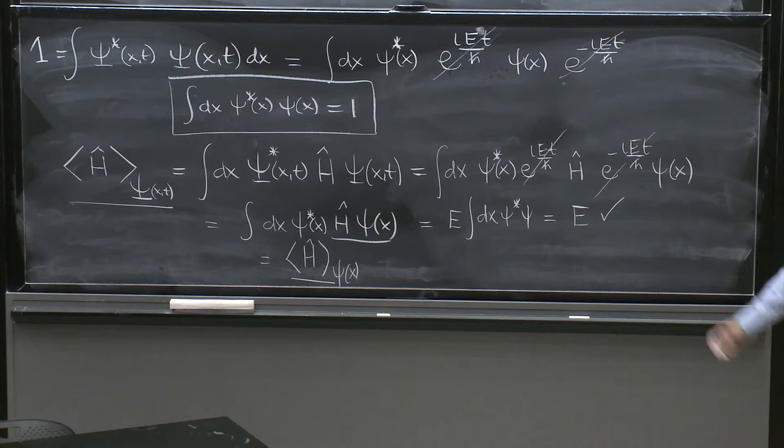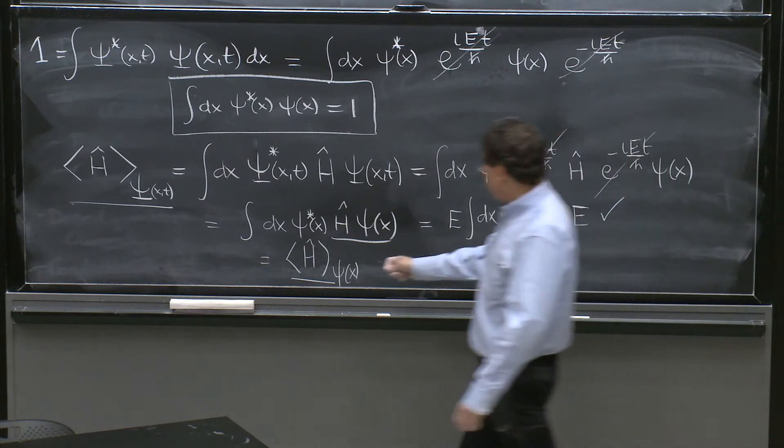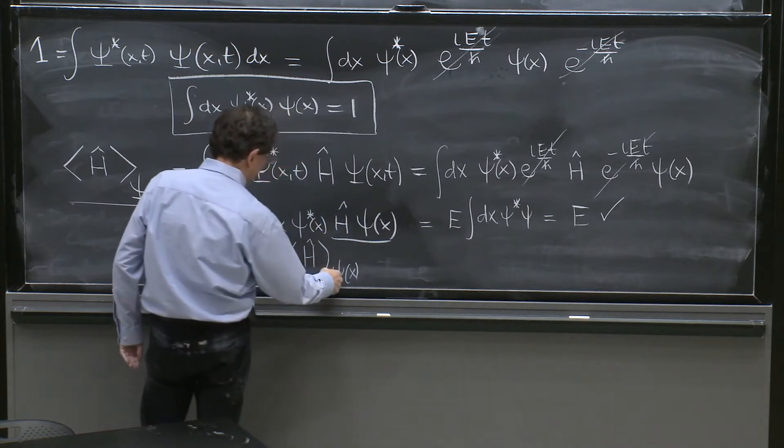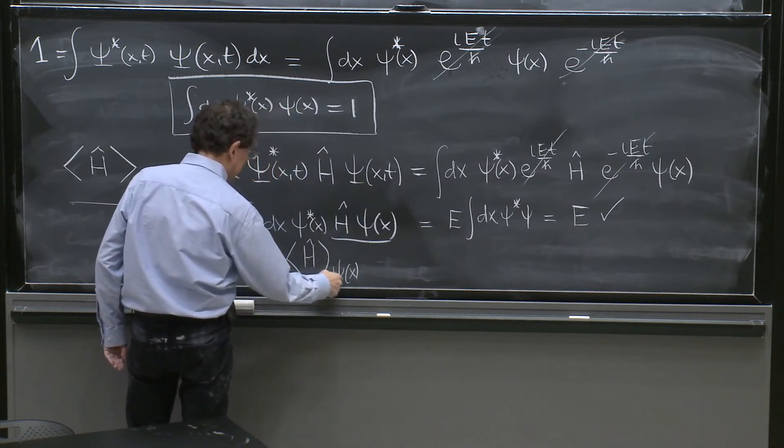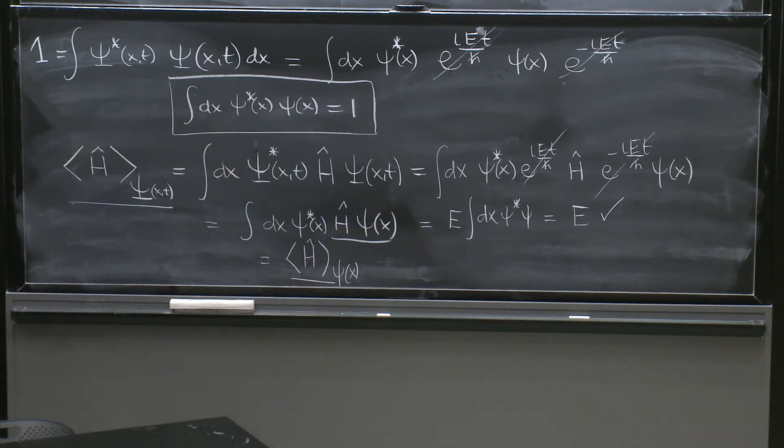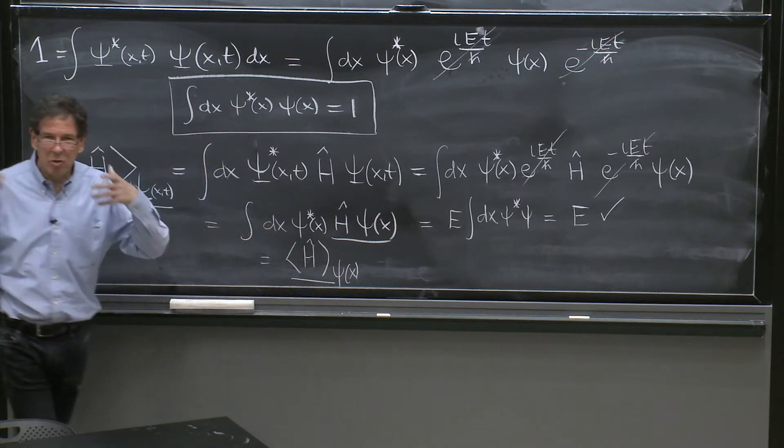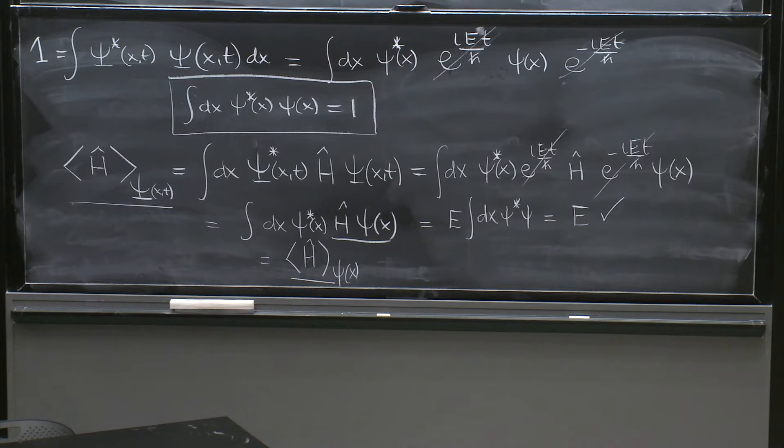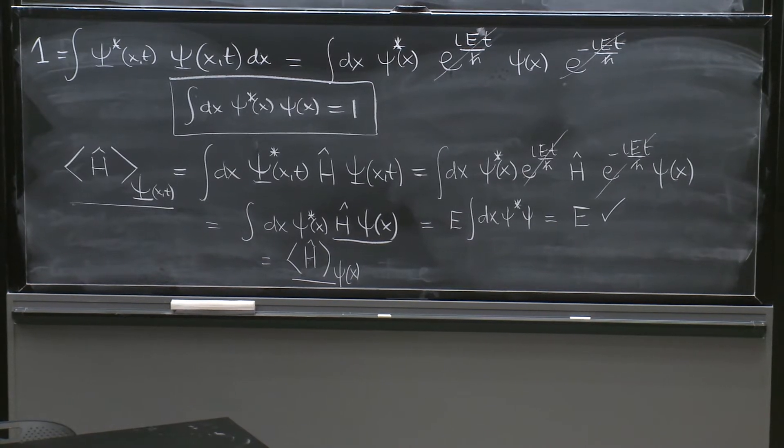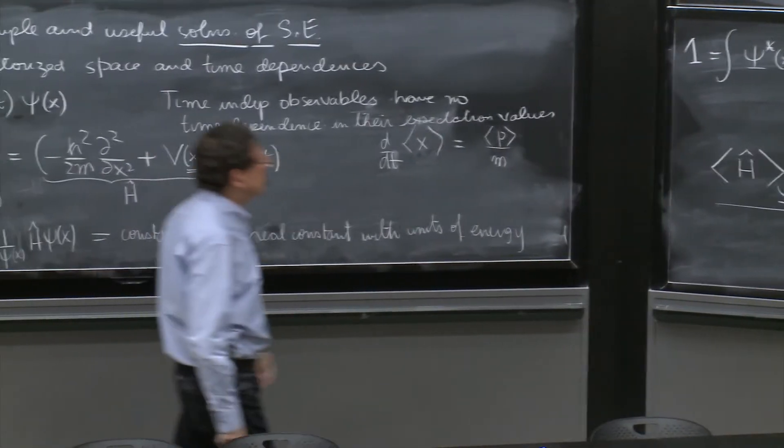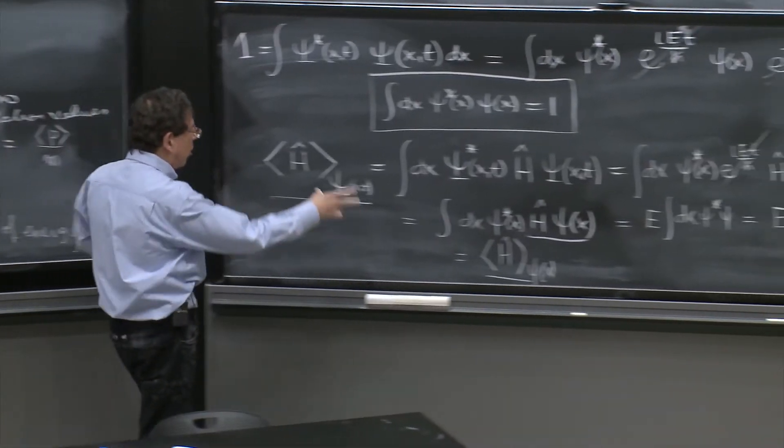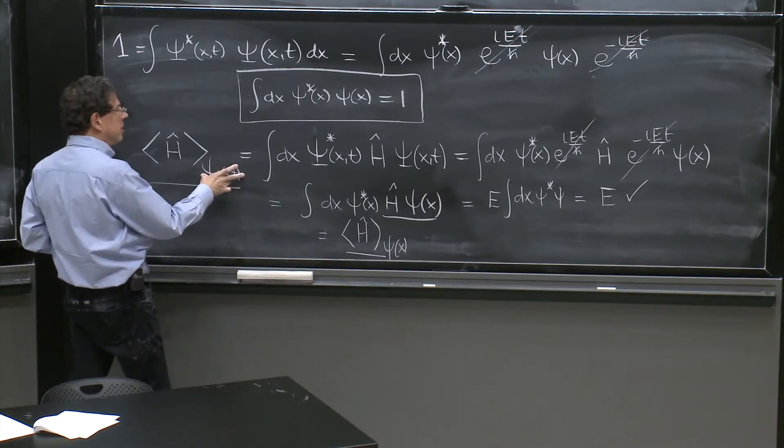By the way, these states are energy eigenstates, these psi of x's. So you would expect zero uncertainty, because they are energy eigenstates. So there's zero uncertainty of the energy operator in an energy eigenstate. There's zero uncertainty even in the whole stationary state.